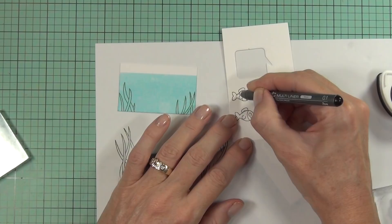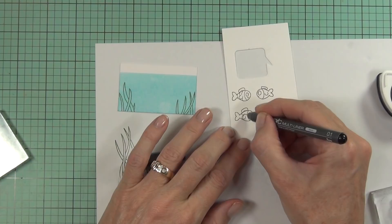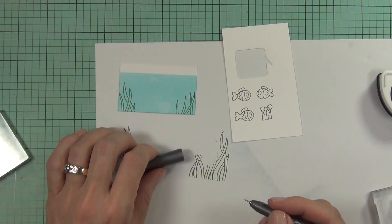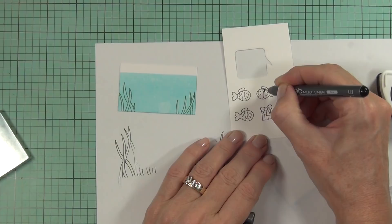So there are some really cute little fish stamps in this set and I thought it'd be really fun to make a fish tank. So what I did was just create my fish tank with some Bristol smooth cardstock.